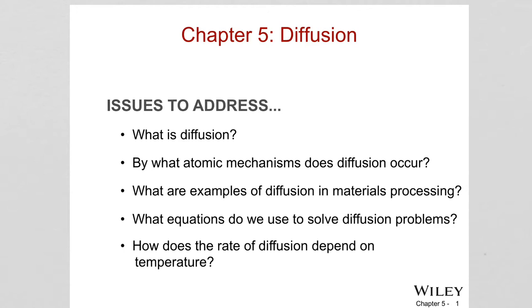As the temperature increases, diffusion also increases. That is the reason why at high temperatures, materials are more susceptible to corrosion, because corrosion is a process where atomic motion is very important. When we increase the temperature, the rate of atom movement increases, and therefore corrosion increases.